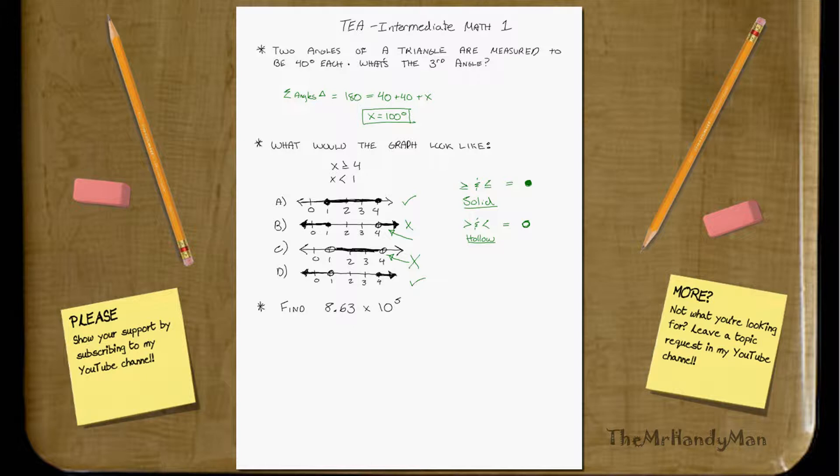x is less than 1. Well, in the first one, x is greater than or equal to 4. And this one is x is less than 1. And you'll find that this one, that option A does not allow for that.